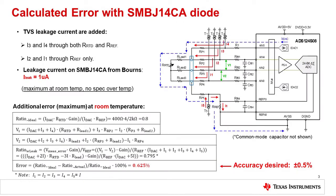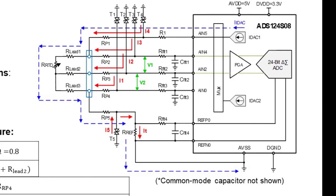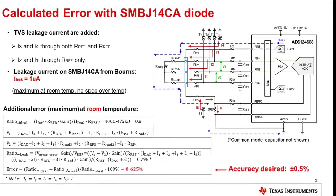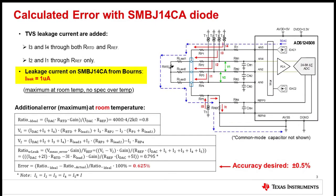Here we will calculate the error from TVS diode leakage. Look at the circuit on the right side. The leakage current from T3 and T4 flows through both the RTD sensor and reference resistor RREF, as well as the lead resistances RLEAD1 and RLEAD3. The leakage current I2 from T2 flows through RLEAD2, RLEAD3, and the RREF reference resistor. The leakage current I1 from the T1 TVS diode will flow through RLEAD3 and the RREF resistor. The leakage current of SMBJ14CA is 1 µA maximum at room temperature. The conversion result for this RTD circuit can be thought of as a ratio of the RTD resistance to the reference resistance with a gain factor. The ideal ratio can be calculated with the first equation, resulting in 0.8. This ratio doesn't include any leakage current error sources.